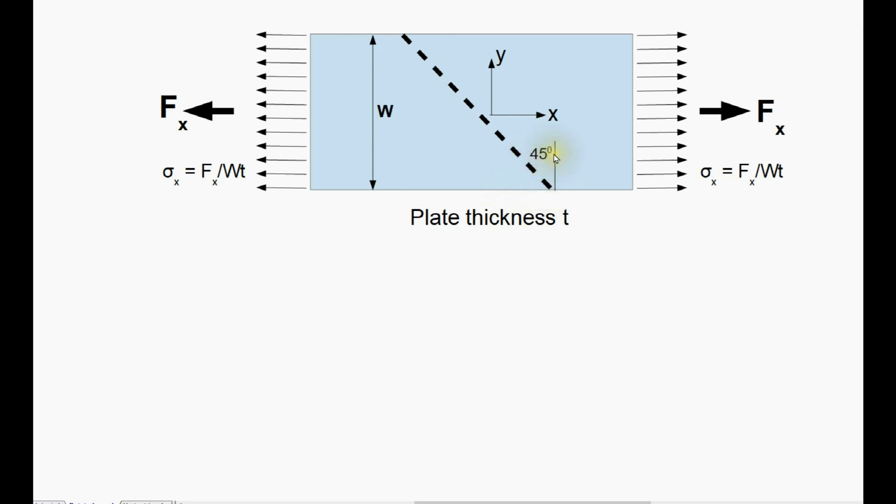Now I could take it at an arbitrary angle theta, but if I did that, I'd have a lot of trigonometric functions, so I've taken a special case of 45 degrees, because we know that both cos 45 and sin 45 are 1 over root 2, but I do assure you that what I'm doing has general applicability.